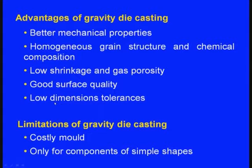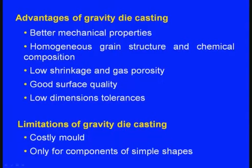Close dimensional tolerances: in sand casting, because of the rough surface we need machining, so there is a machining allowance and lesser dimensional tolerance. In die casting, the metallic mould is already smooth, so minimum or no machining is needed. This gives closer dimensional tolerance and very good dimensional accuracy. These are the advantages of gravity die casting.